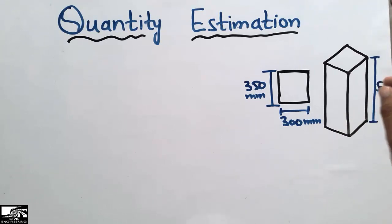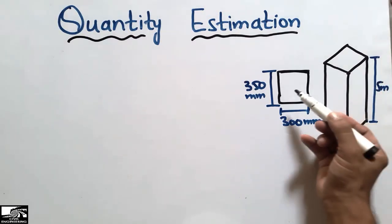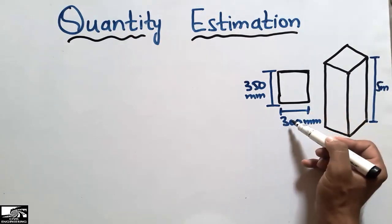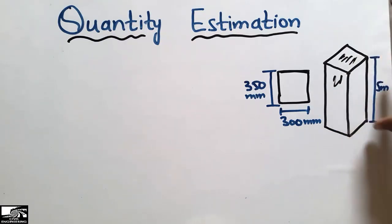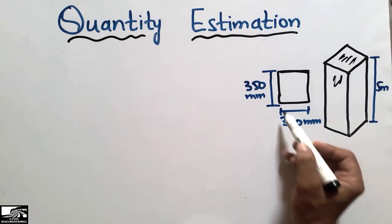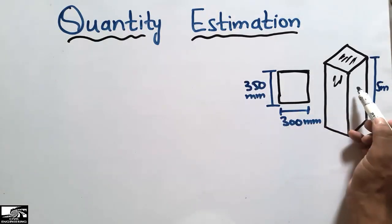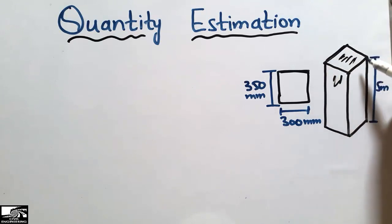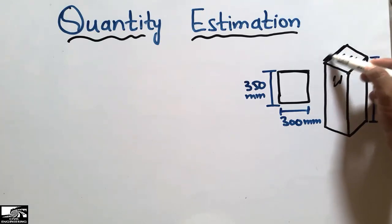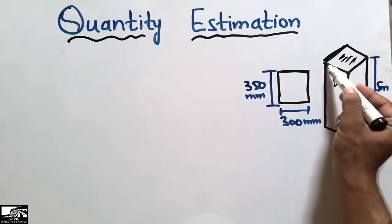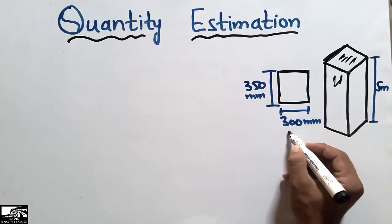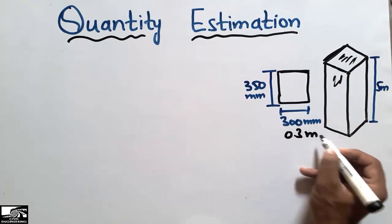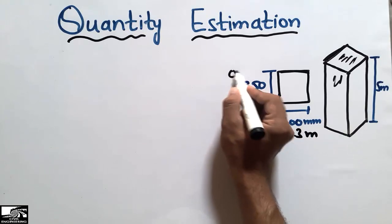This is the column given to us with known cross-section dimensions. The column has a length or depth of 5 meters. The two cross-section dimensions are 350 mm and 300 mm, or 0.35 meters and 0.3 meters.